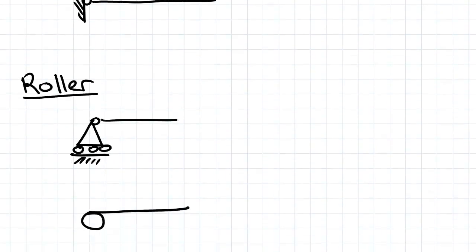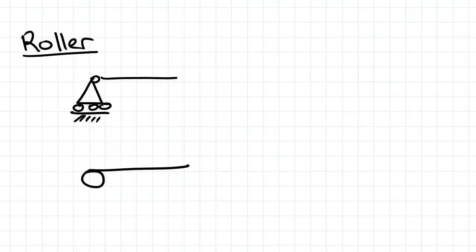The next most common support you might come across is what's called a roller support. A roller support only restrains in the vertical direction. You're not getting any restraint in the horizontal direction, it's free to move and there's therefore going to be no reaction there.